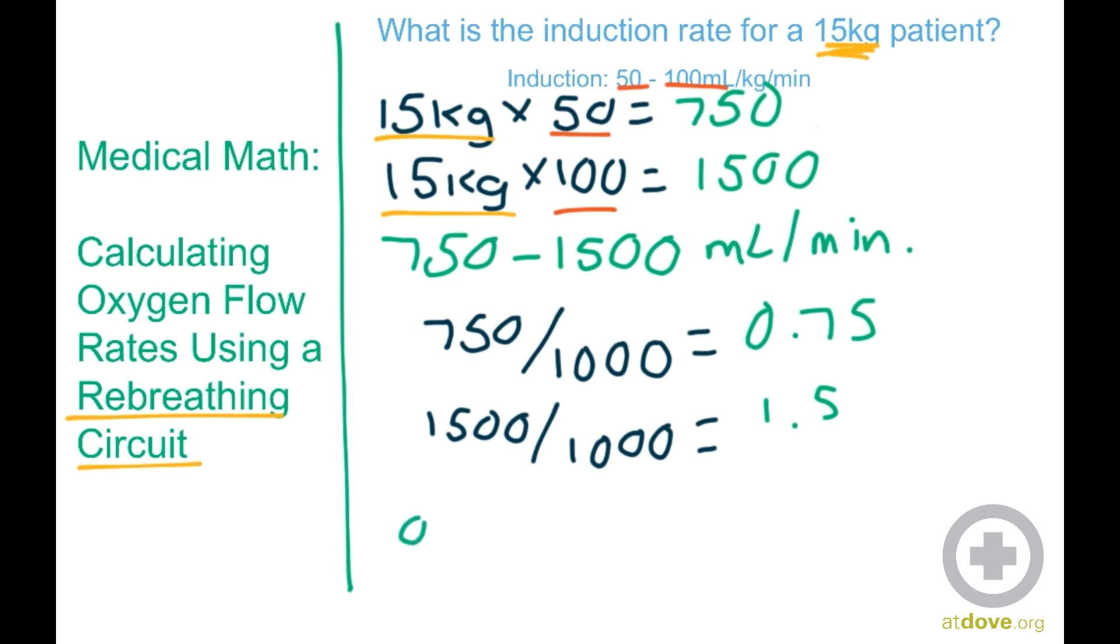So our end result here is 0.75 to 1.5 liters per minute, which is the value we need to actually put into the oxygen flow meter. The 750 was the low end of our induction range, and 1,500 was the high end of our induction range, and that's just to convert it from milliliters into liters. So your end result is 0.75 to 1.5 liters per minute.